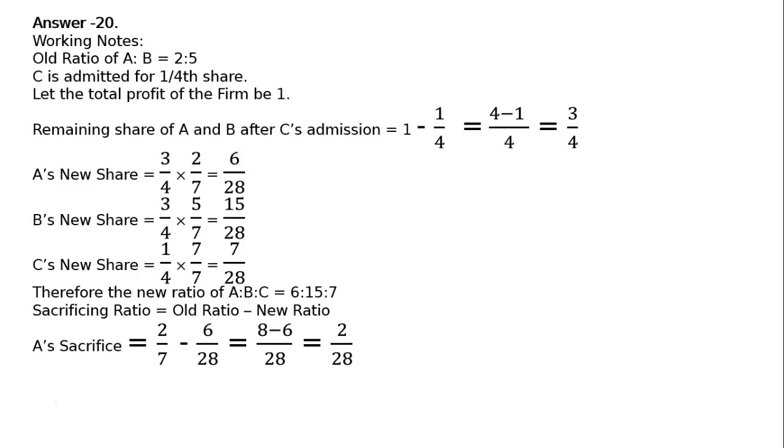That of B is equal to 5 upon 7 minus new share 15 upon 28. LCM 28, 20 minus 15 is equal to 5 upon 28. Therefore, sacrificing ratio of A is to B is equal to 2 is to 5.